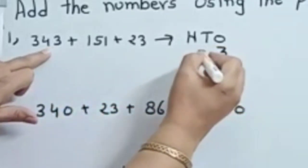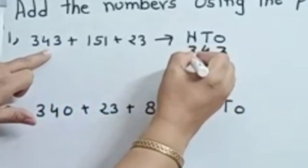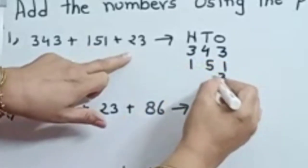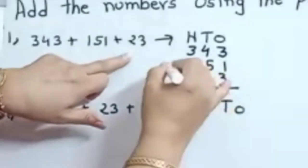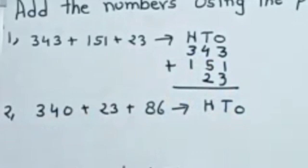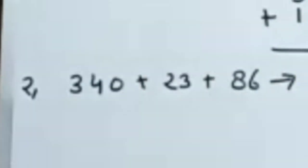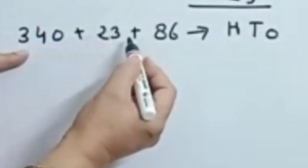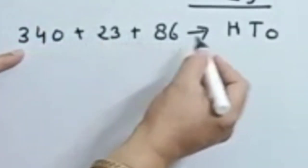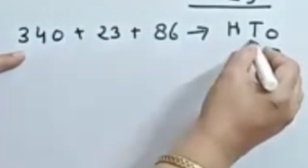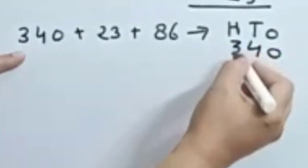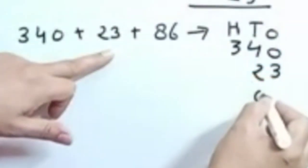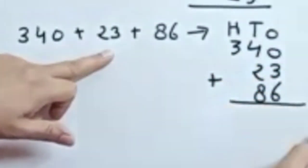Start from this number. Here: 3, 4, 3, 1, 5, 1, 2, 3. Now add this number. Another number we have: 340 plus 23 plus 86. Means 0 here, 4, 3 for 340.